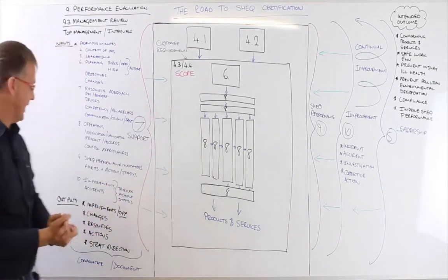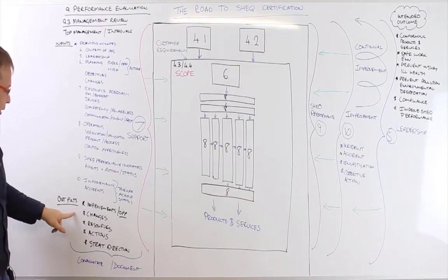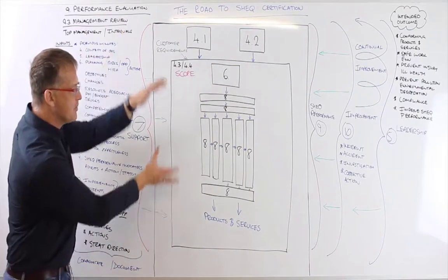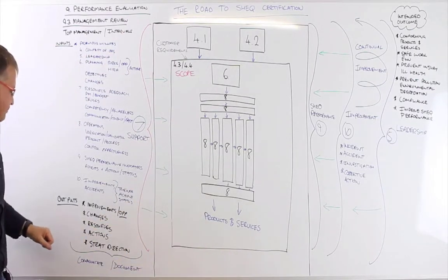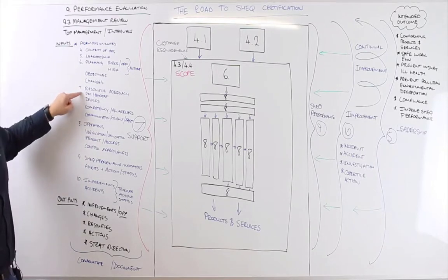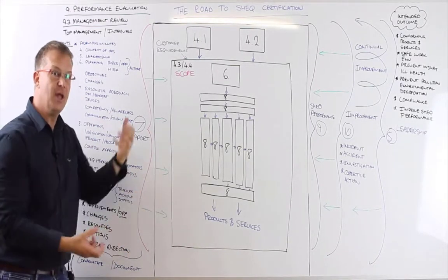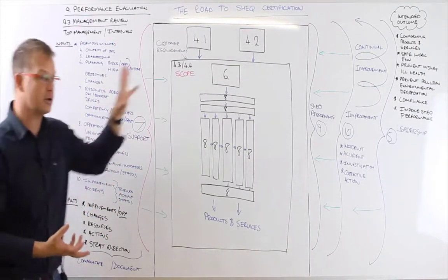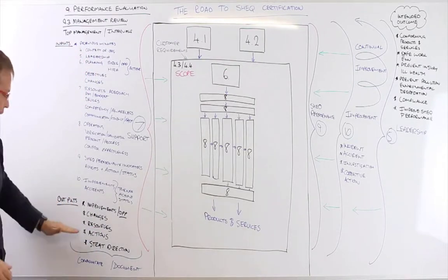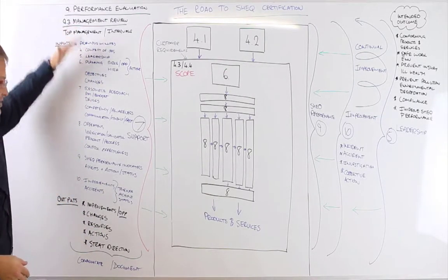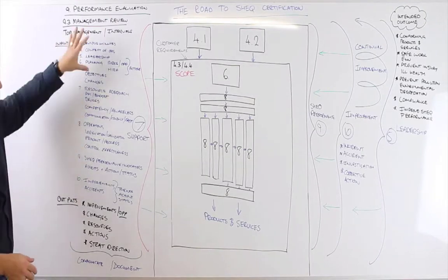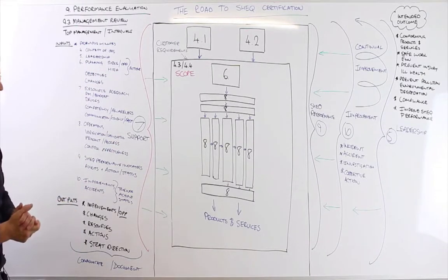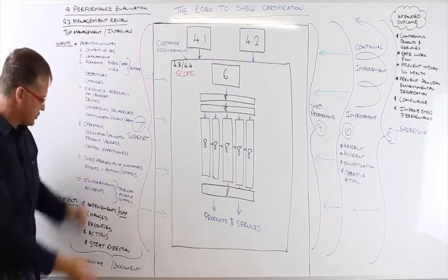It might result in minutes, which is an action plan. So as part of the outputs, we'd have what are some of the improvement opportunities that we can make? What are some of the changes that we need to make to our SHE management system? Are there additional resources? Are the resources that we've provided, are they adequate? Are they suitable? Is it effective? Do we need additional resources? Do we need to contract resources based on the production or operational plan going forward? What actions are we going to take based on the statistical analysis, trend analysis of the performance indicators? How does all of these actions link to our strategic direction? And at the end of all of this, with the minutes or the action plan, that needs to be communicated into the organization.